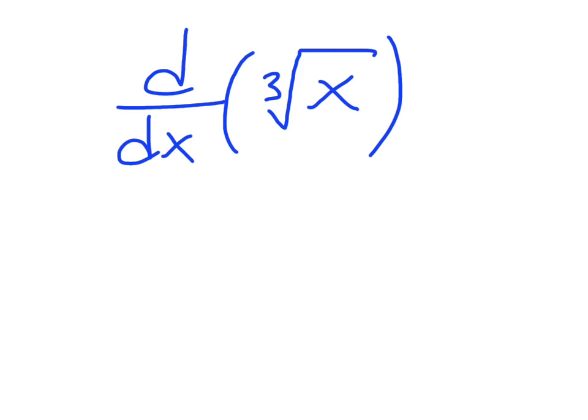Like I've said before, any type of radical, often times it's easier to write it as its exponent form. So if we have cube root of x, one of the things you should be familiar with is being able to write this as x to the one-third. So your index right here is in the denominator, so this guy right here.